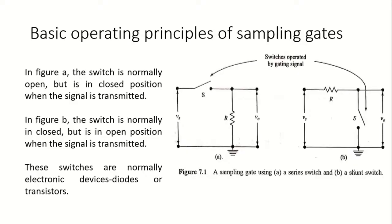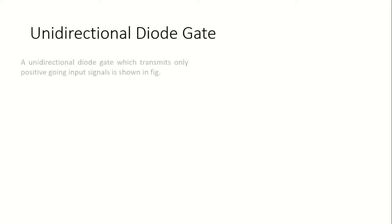These switches represented here are actually electronic devices — they might be a diode or a transistor — which serve the purpose of a switch in the circuit. Now let us see how a sampling gate is constructed with the help of a diode.